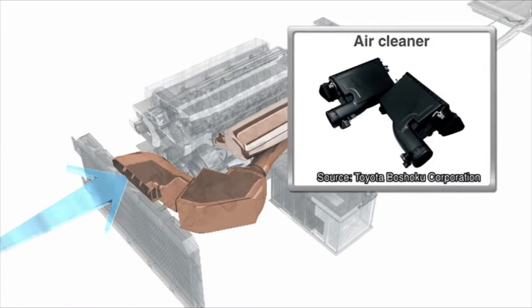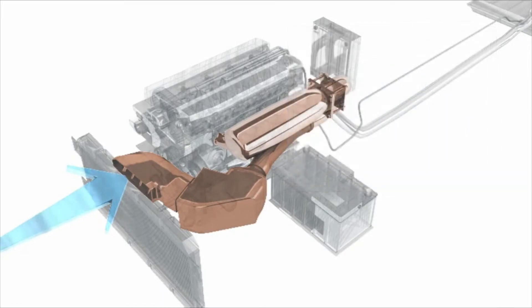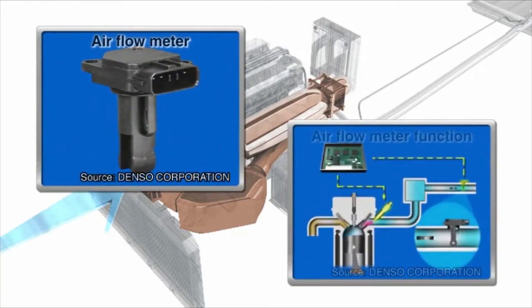The air cleaner removes debris. The fuel that is injected into the engine is actually a mixture of air and fuel. The air flow meter measures how much air is passing through a tube and determines the fuel injection rate.